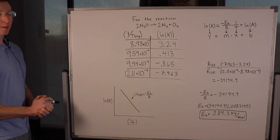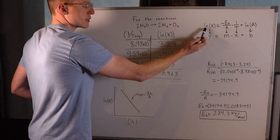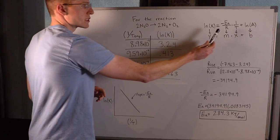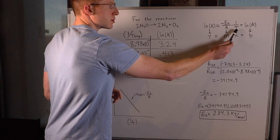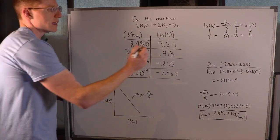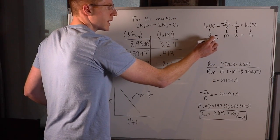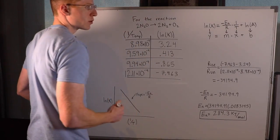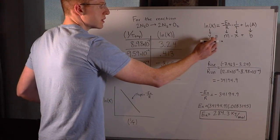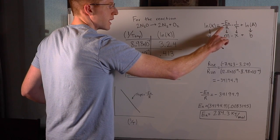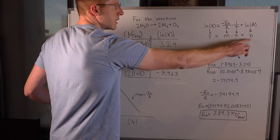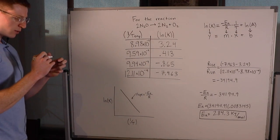There's another important form of the Arrhenius equation: ln(k) = -Ea/R × (1/T) + ln(A). This is in the same form as y = mx + b, where y is ln(k), the slope m is -Ea/R, x is 1/T, and b is ln(A).